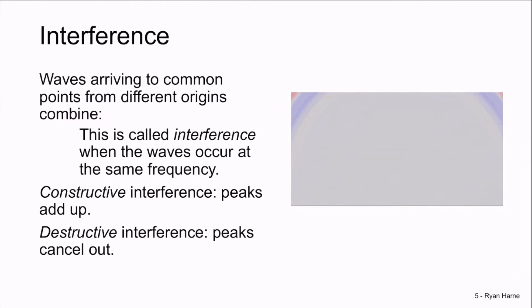Constructive interference is when the peaks add up. We see constructive interference in the video at the center of the wave combination. So in a vertical line, straight through this video, we see constructive interference. On the other hand, destructive interference is when the peaks cancel out. We see destructive interference off this vertical line, off-axis.